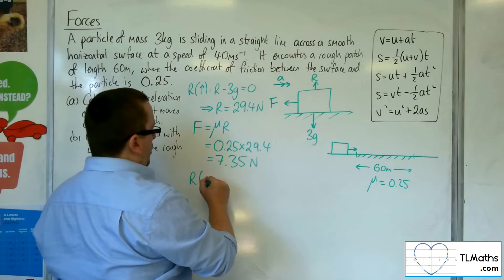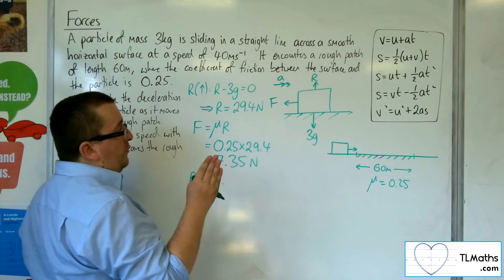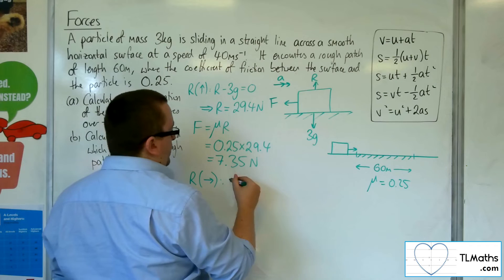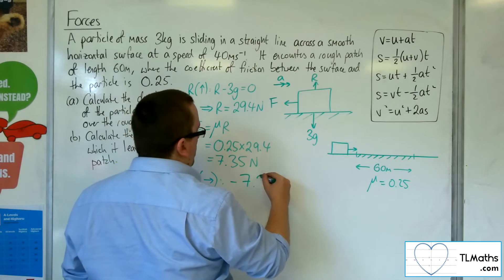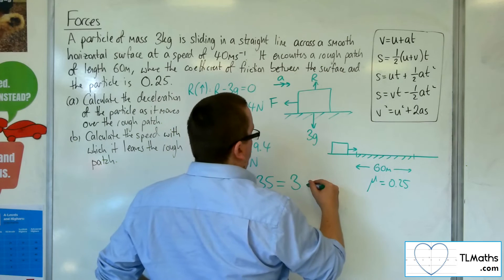So if we resolve horizontally, taking to the right as positive, then the only force that's working horizontally is the frictional force. So minus 7.35. And that's got to be equal to the mass times the acceleration.